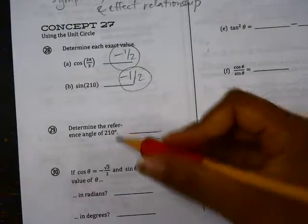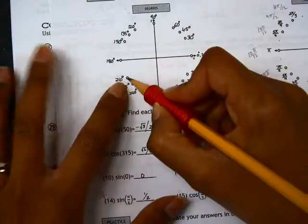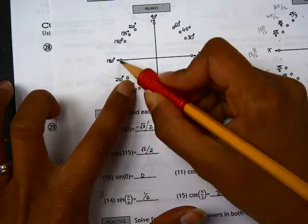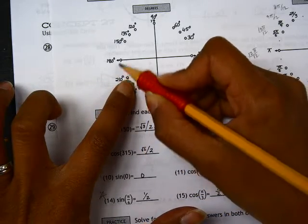Determine the reference angle for 210 degrees. The reference angle is the acute angle between this angle and the x-axis, so from here to here is exactly 30 degrees.